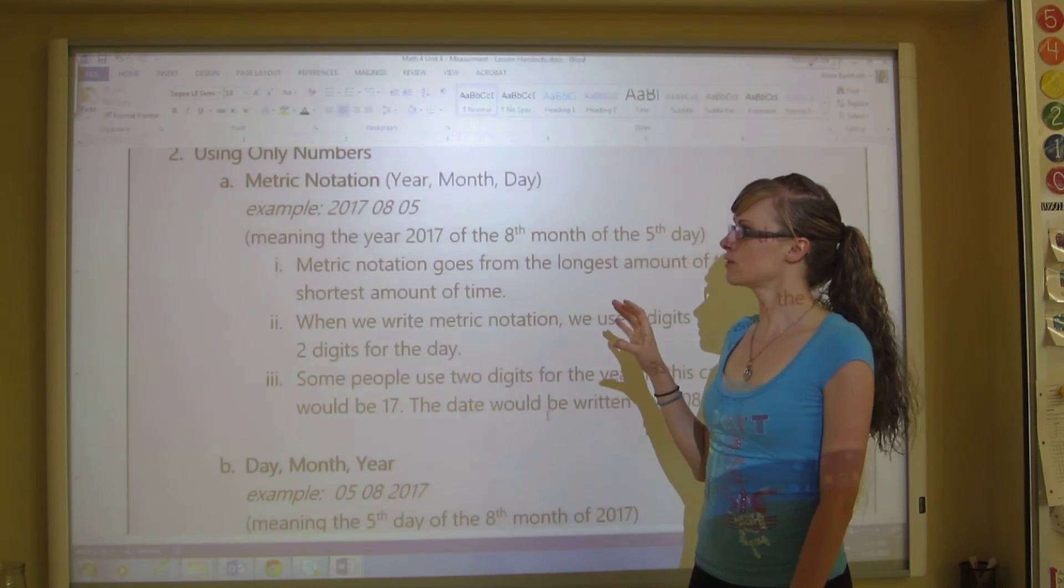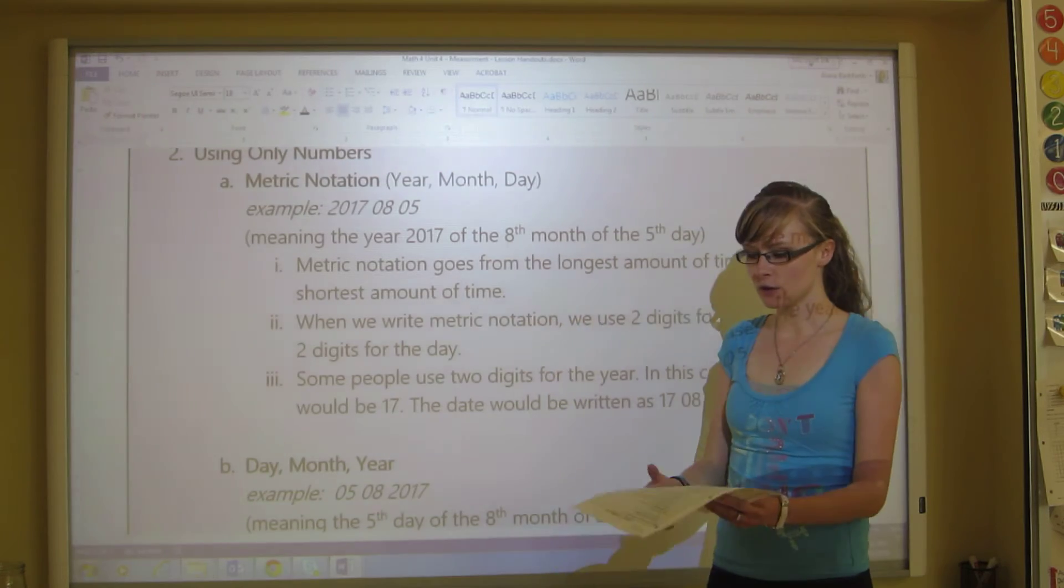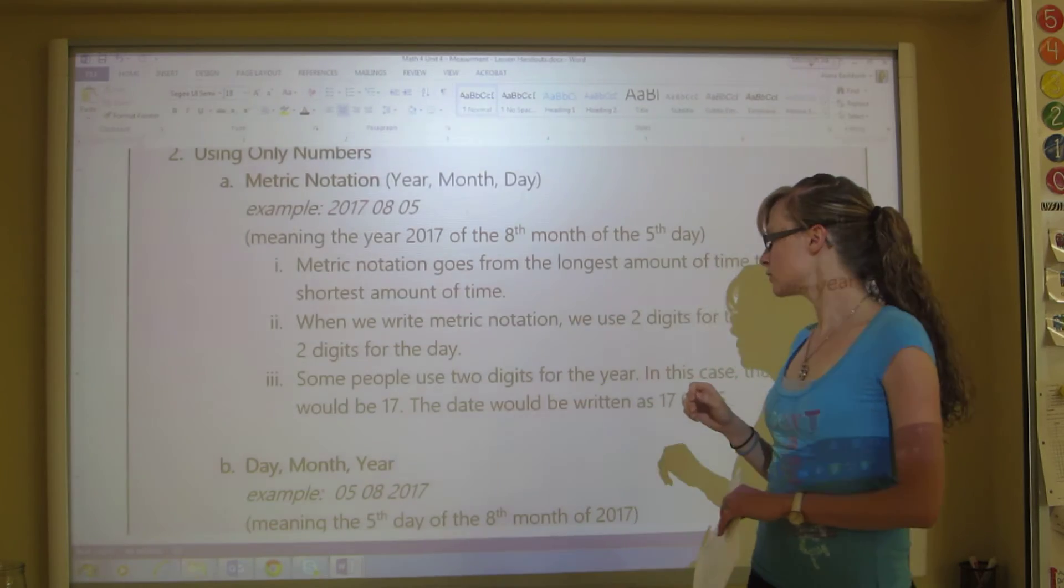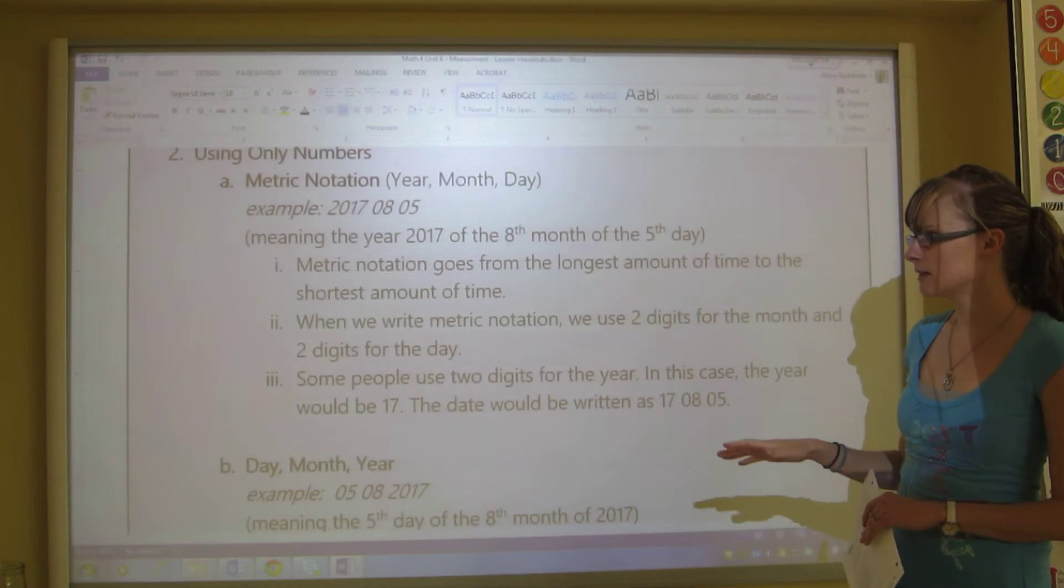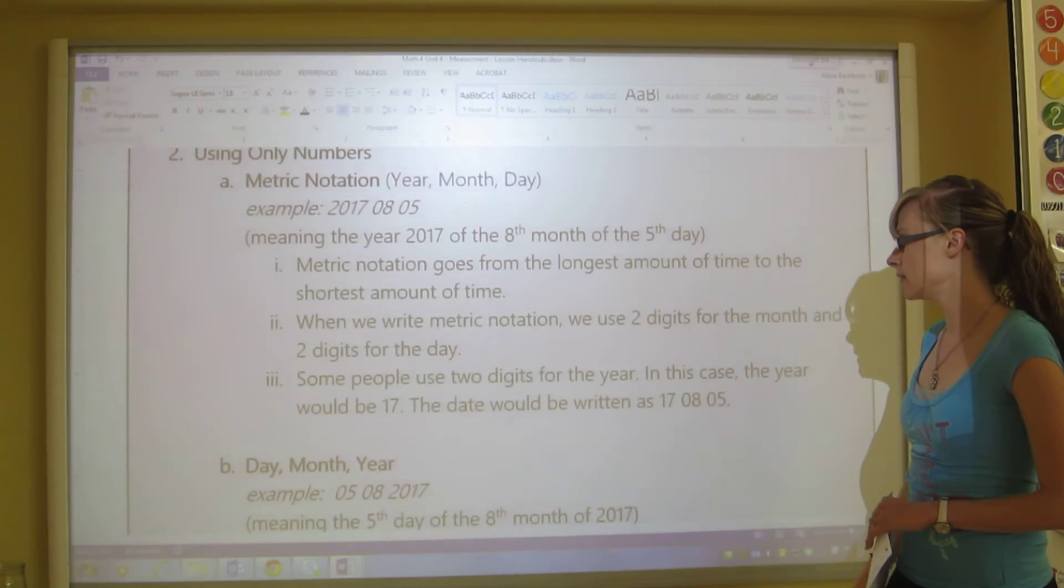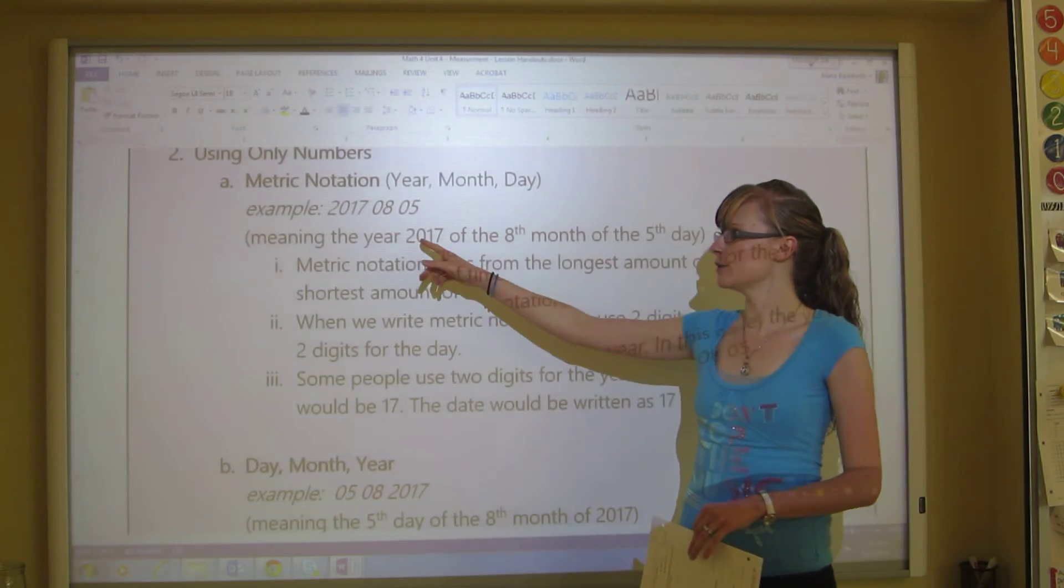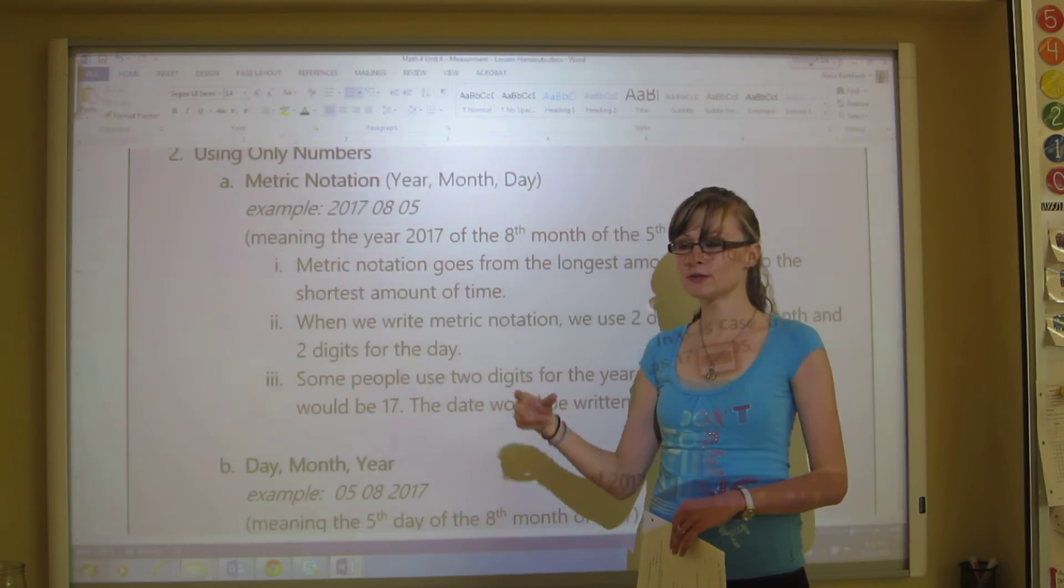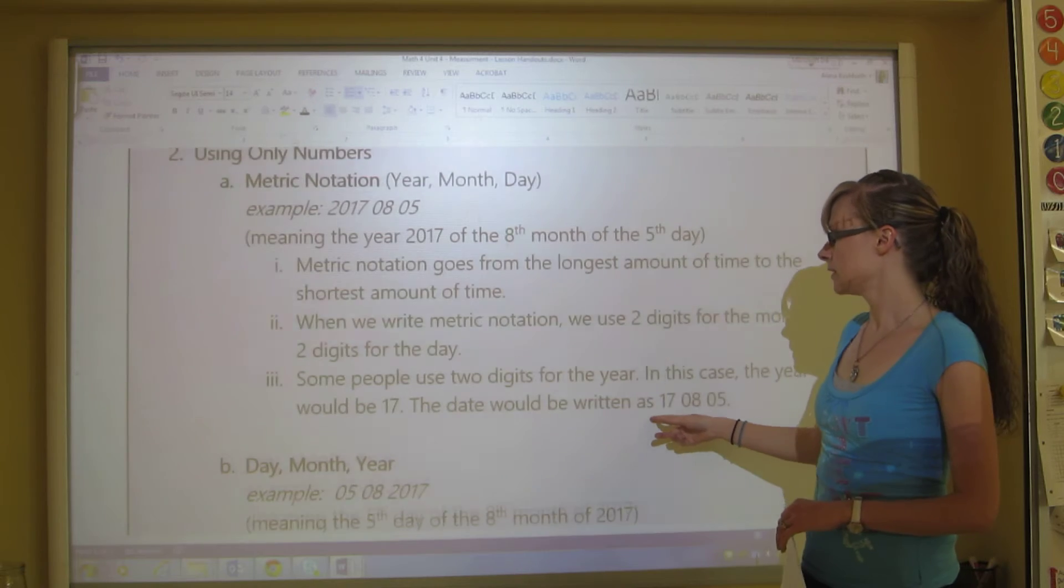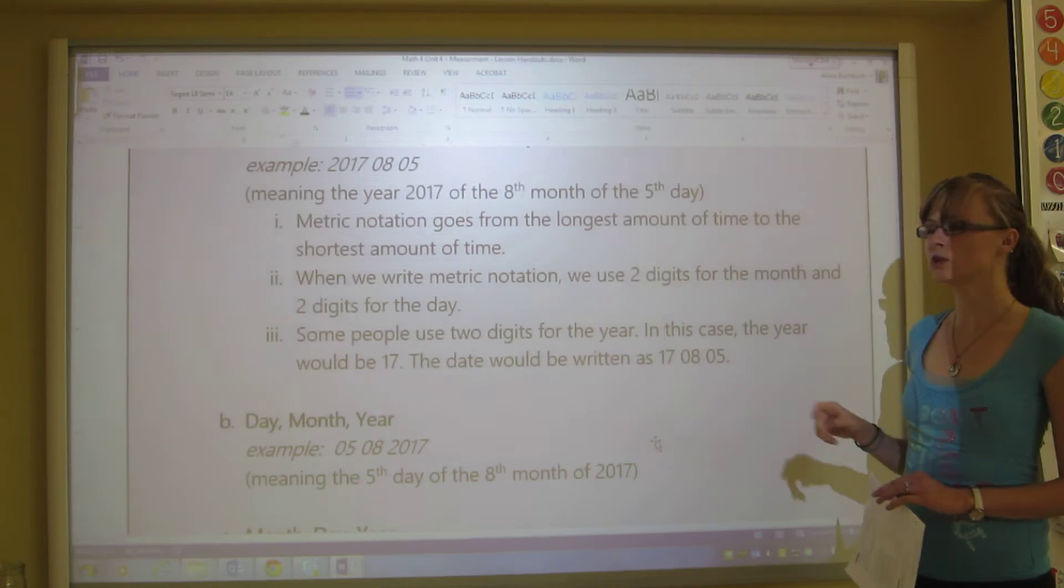And this would mean that it's the year 2017 of the eighth month of the fifth day. Now here's a few more things that you need to know about metric notation. This one says metric notation goes from the longest amount of time to the shortest amount of time. The second thing is when we write metric notation, we use two digits for the month and the day for the year. And the last thing is that some people use two digits for the year instead of four. You just look at the end. So I would just take 17 as my two digit number for the year.